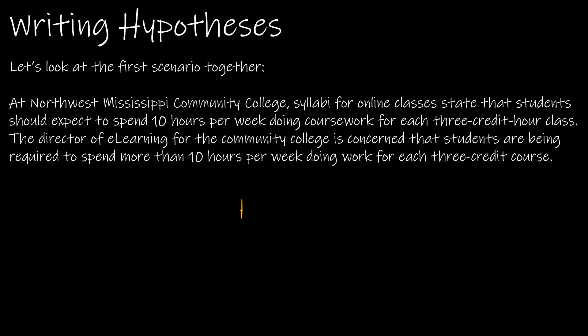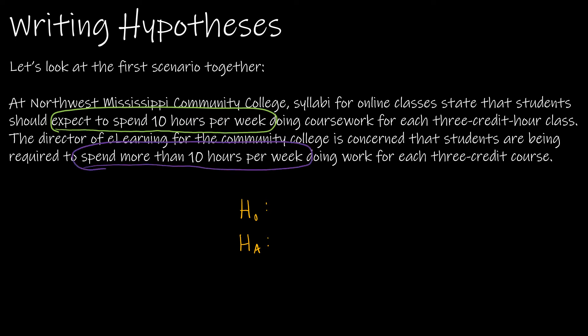We're going to look at some scenarios together and determine what hypotheses we should write. We always have H sub zero and H sub A. The first scenario: Northwest Mississippi Community College syllabi for online classes state students should expect to spend 10 hours per week for a three credit hour class. The director of e-learning is concerned that students are being required to spend more than 10 hours per week. Is 10 a proportion or a mean? Proportions are percentages — parts of a whole. This is not a part of a whole, so this is a mean. We're going to use mu. Remember, the null hypothesis is always equal.